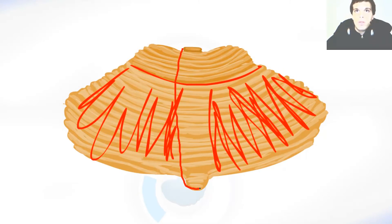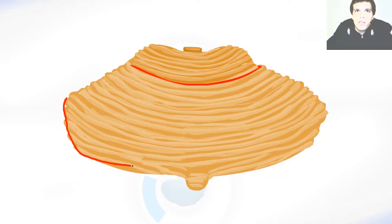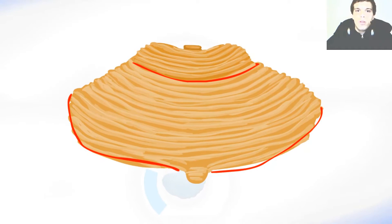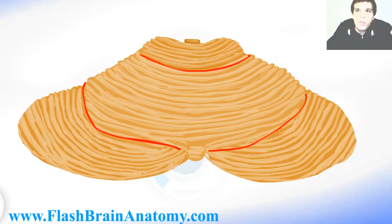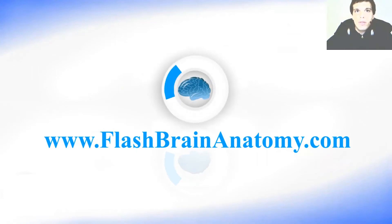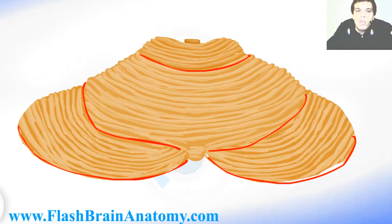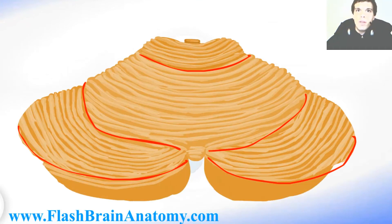As I said in the last video, this in the middle is the vermis. Then we have the posterior superior fissure over here that divides the posterior part of the quadrangular lobe from the superior semilunar lobe. Then we have the horizontal fissure — if you remember, I drew that in the last video from the frontal side. And below that there is the inferior semilunar lobe.